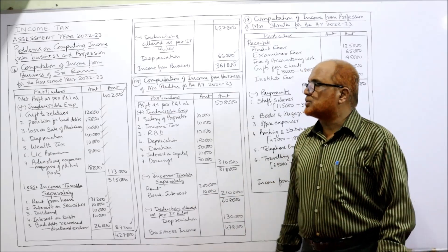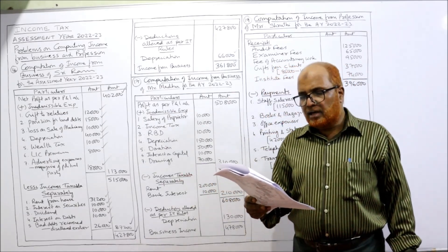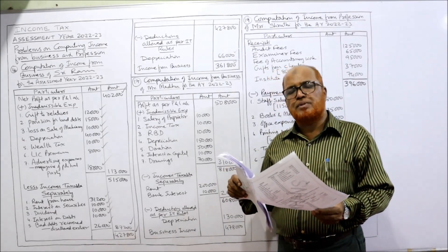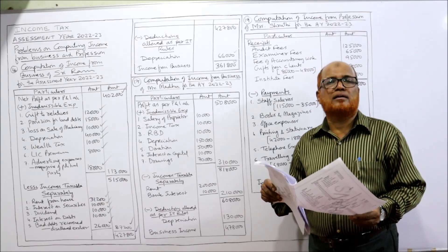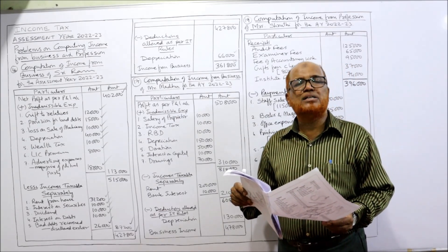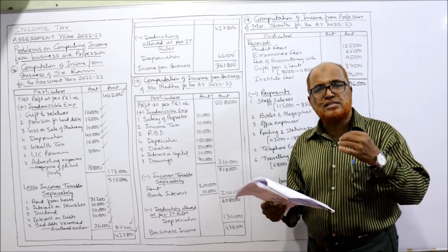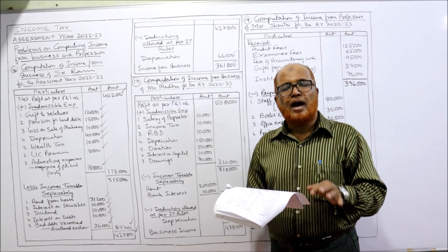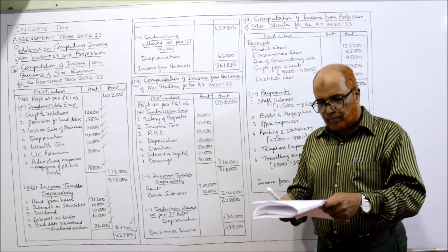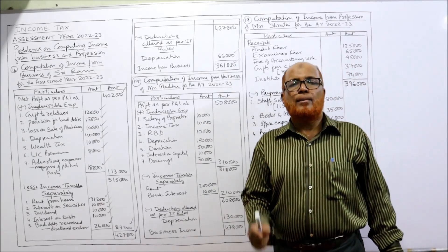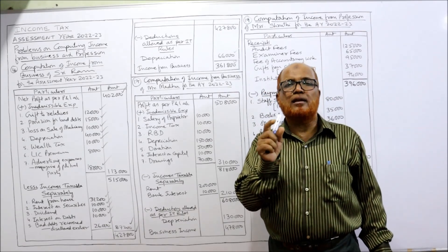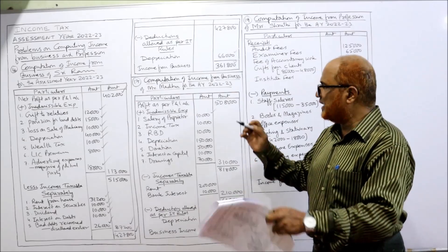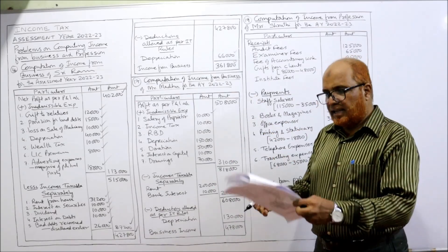Now the 17th problem: compute income from business of Madhu from the following information. A profit and loss account is given with two adjustments: salaries include proprietor's salary, which will be disallowed and added back; and depreciation allowed as per income tax act is given. Whatever depreciation is debited to the profit and loss account will be disallowed, and depreciation as per IT rules will be allowed. Salary of 80,000 includes proprietor's salary of 10,000 — that 10,000 is disallowed. Net profit is 5,08,000.